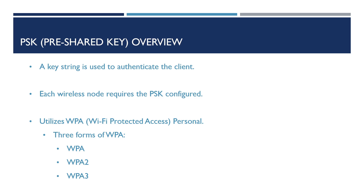In order for pre-shared key authentication to work, it utilizes one of three versions of WPA, also known as Wi-Fi Protected Access. There are three modes of WPA available and certified by the Wi-Fi Alliance. The first is WPA, also referred to as WPA1, which was a replacement for an old security standard known as Wired Equivalent Privacy, or WEP for short.